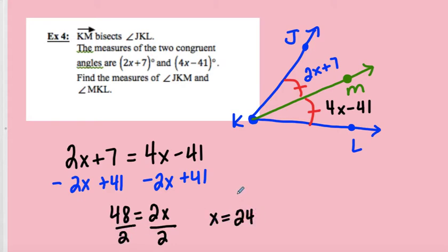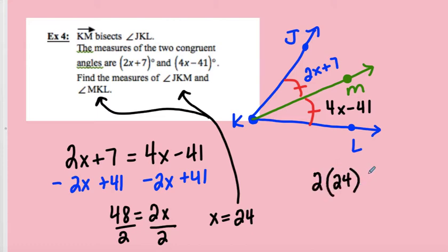But hey, wait Coach Fred, I don't want x, I want to find the measures of JKM and MKL. Alright, so now I've got to do some more work. So I'm going to pick one of them, because they're equal, I just have to find one. So I'm going to do JKM, because those numbers are a little bit smaller. So I'm going to substitute 24 in for x, and simplify the expression. So 2 times 24 gives me 48, 48 plus 7 gives me 55 degrees. So both of them have equal measure, so they are both 55 degrees.